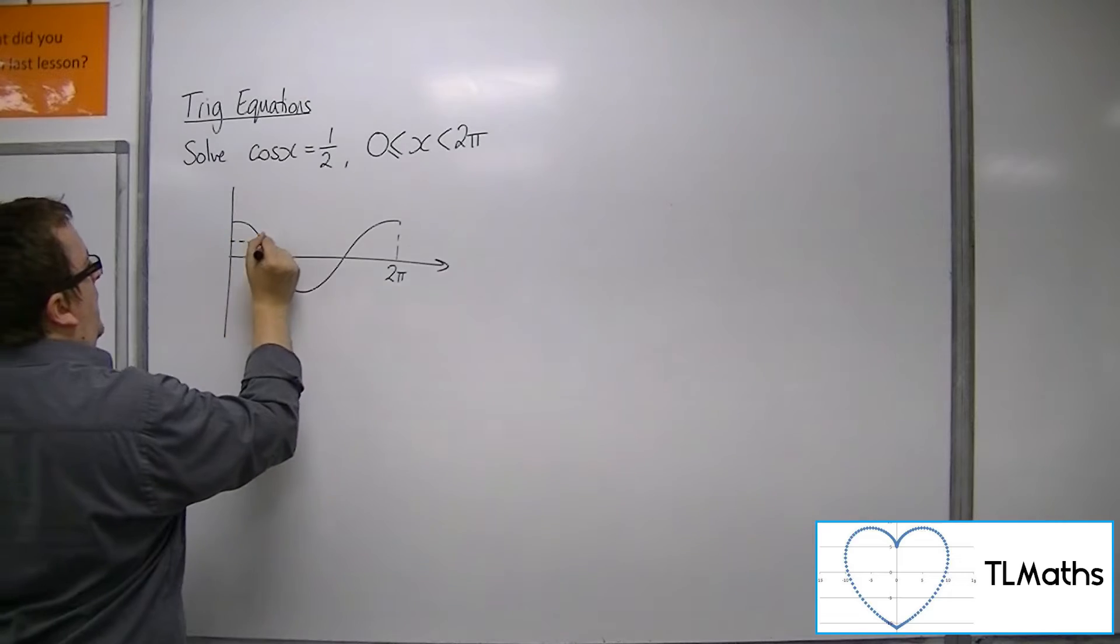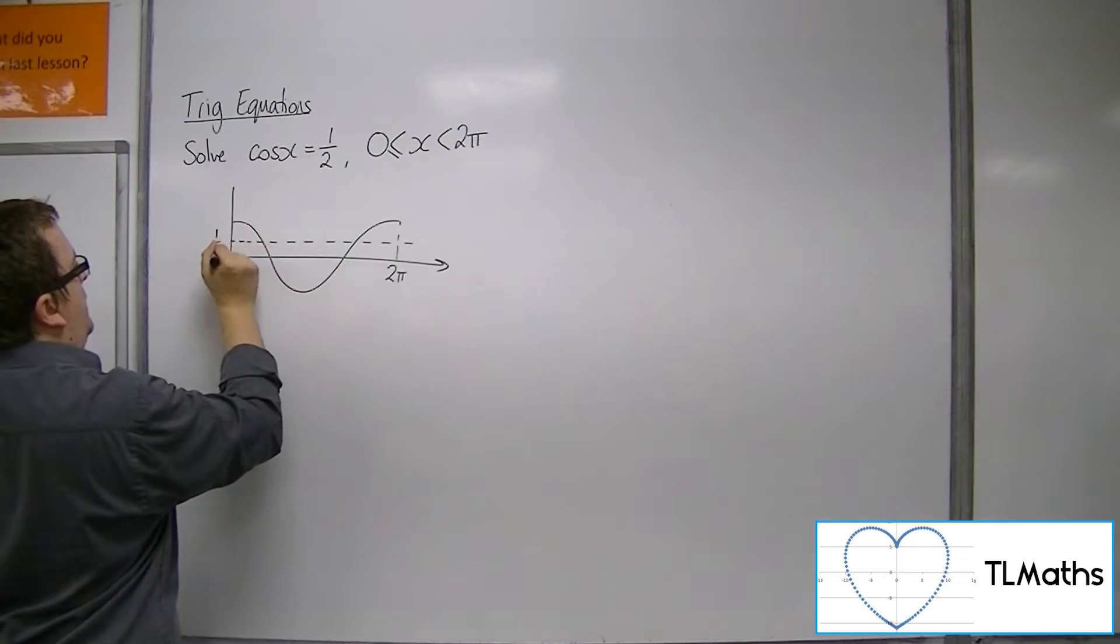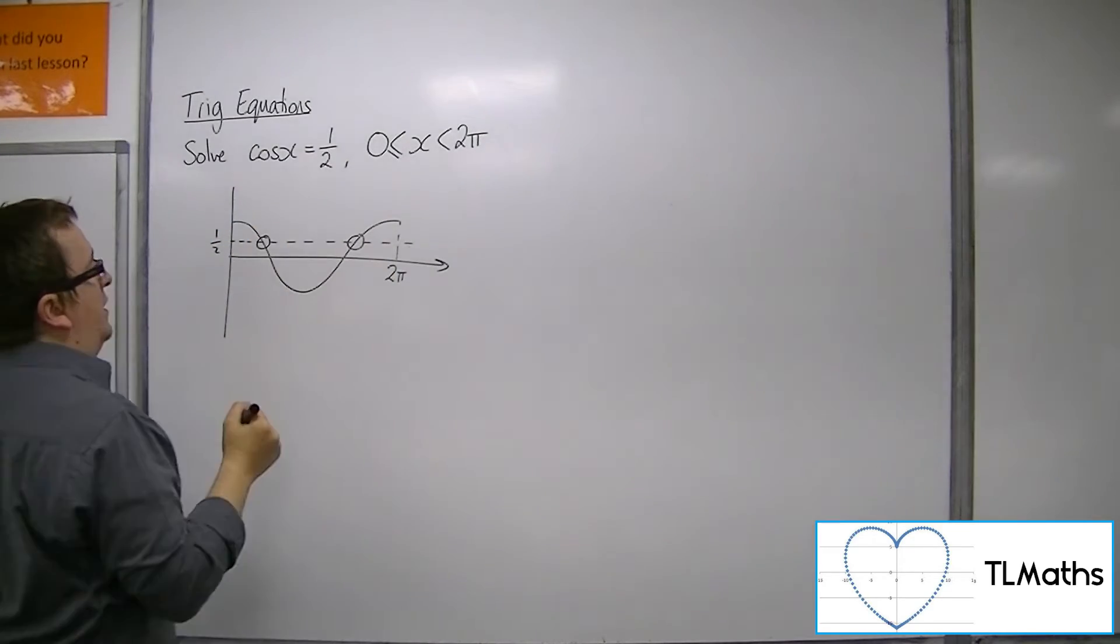There's 2 pi. Now one half will be a horizontal line that crosses the cosine curve twice.